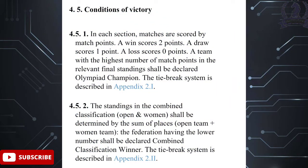Let us know about the conditions for victory. In each section, matches are scored by match points: a win scores 2 points, a draw scores 1 point, and a loss scores 0 points. The team with the highest number of match points in the final standing shall be declared Olympiad champion. The combined classification for both open and women's sections shall be determined by the sum of places, and the federation with the lower number shall be declared the combined classification winner.